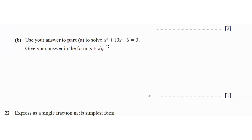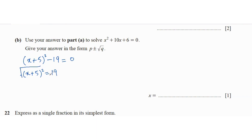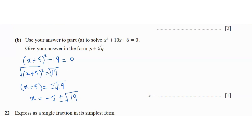Use the completing-the-square result to solve x squared plus 10x plus 6 equals 0, giving the answer in the form p plus or minus the square root of q. From (x plus 5) squared minus 19 equals 0, move 19 to the other side and square root both sides: x plus 5 equals plus or minus the square root of 19. Therefore x equals negative 5 plus or minus the square root of 19, so p equals negative 5 and q equals 19.